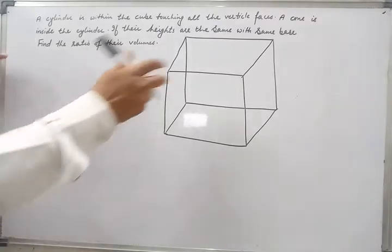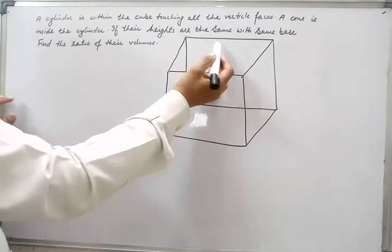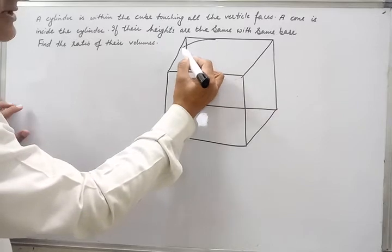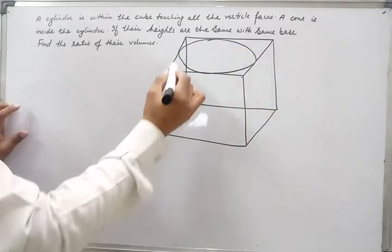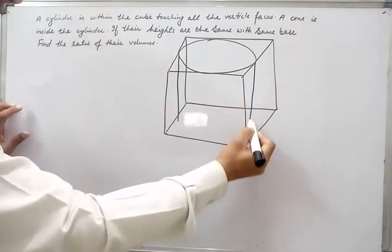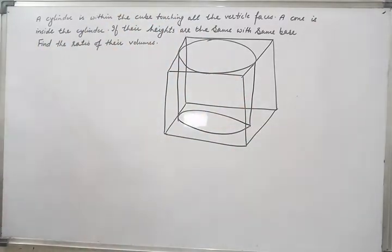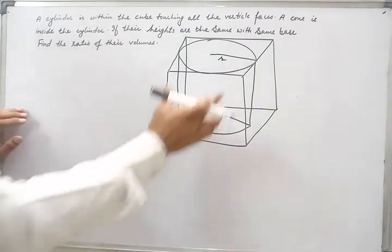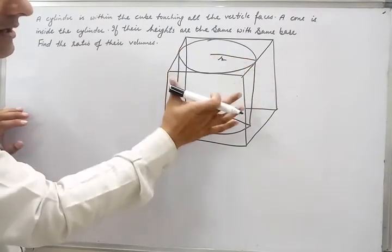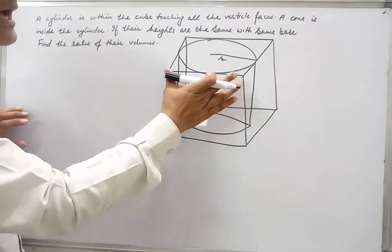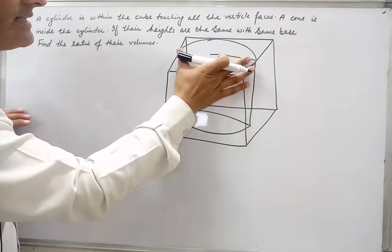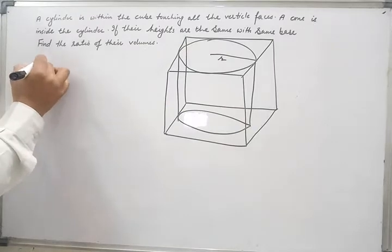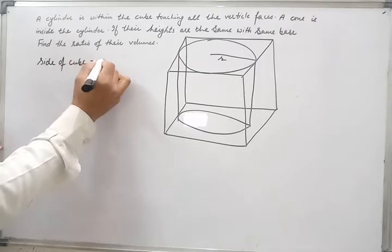In this question, a cylinder is given which is within the cube, touching all the vertical faces. Let's draw a cylinder touching all the vertical faces of this cube. If we observe, the diameter of the cylinder is equal to the side of the cube. So the diameter of the cylinder is 2r, and the side of the cube is also 2r.